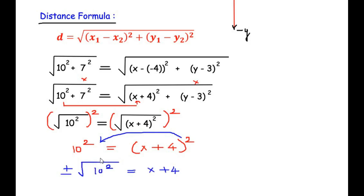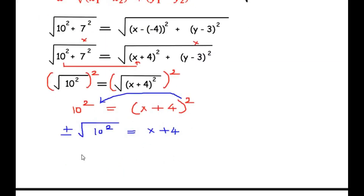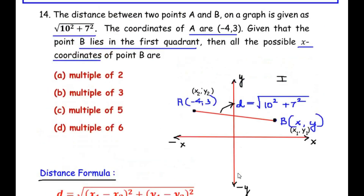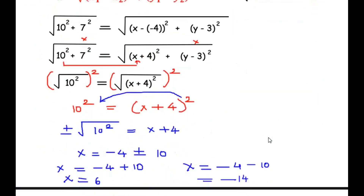Isolating X, we take the +4 to the other side: X = -4 ± √(10²). Since 10² is 100, √100 = 10. So we get two values: X = -4 + 10 = 6, or X = -4 - 10 = -14. Since B is in the first quadrant where X must be positive, we discard -14 and keep X = 6.